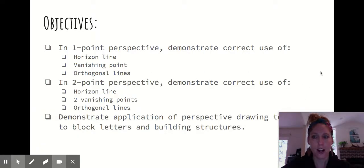The objectives are: in one-point perspective demonstrate correct use of a horizon line, a vanishing point, and orthogonal lines. In two-point perspective demonstrate correct use of a horizon line, two vanishing points, and orthogonal lines. You'll demonstrate application of perspective drawing techniques to block letters and building structures.